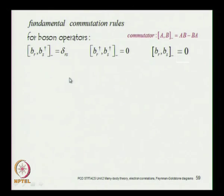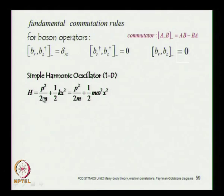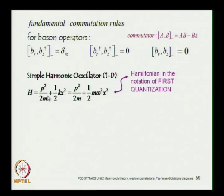These are the fundamental commutation relations for the boson operators. To illustrate how it works, let us consider a simple bosonic system: excitations of the simple harmonic oscillator, which you would have met in your earlier quantum mechanics course. This will be a quick recapitulation. The simple harmonic oscillator Hamiltonian has a quadratic term in the position coordinate; k is the spring constant, omega is the natural frequency, and this is the Hamiltonian in the first quantization notation.